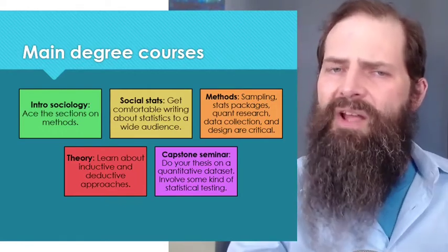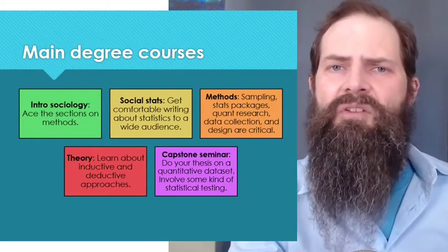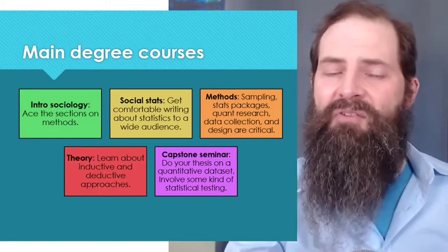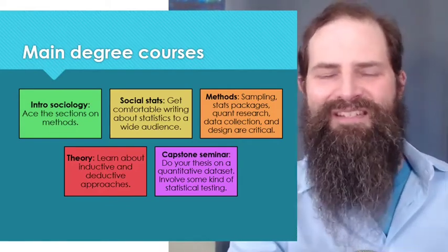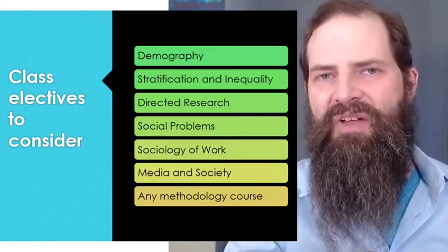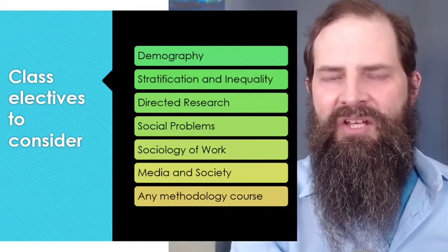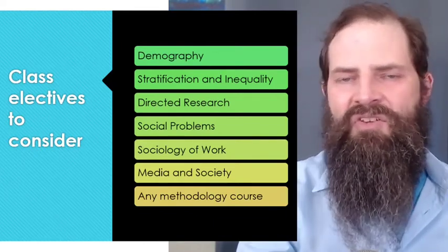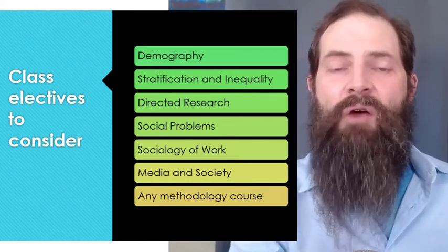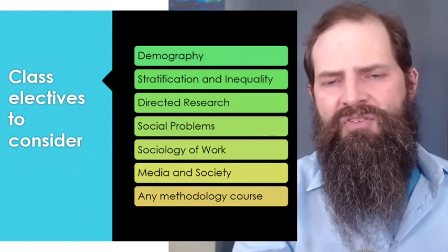Try to publish your senior seminar paper in the undergraduate journal at your university or another university. I'll start a series about publishing your research later on, but leave questions in the comments. When completing your major, you also take electives — usually four or five. Many of these will give you overarching ideas about how we use research and statistics. Demography gives you a great foundation for using statistics to describe things like birth rates, mortality, and illness.